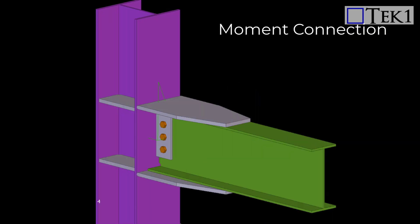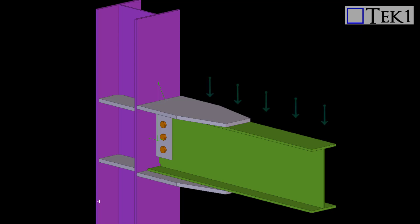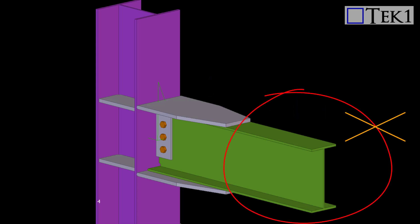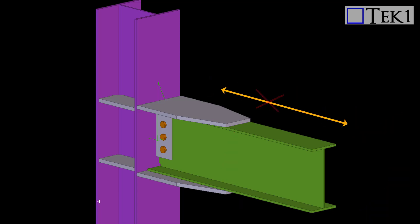A moment connection in structural engineering is a joint that allows the transfer of bending moment forces between a column and beam. Here, the connection is rigid, so when an external load is supplied, the beam does not rotate nor oscillate.